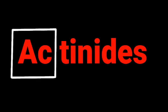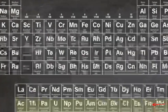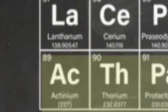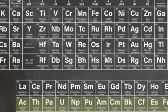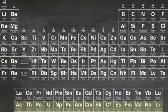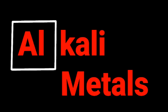Actinides. The actinides are metallic elements that comprise elements 89 through to 103. They get their name from actinium, the first element in the series. They're also often called the F elements because they have valence electrons in the F shell — and if you know what that means then you probably don't need this video.